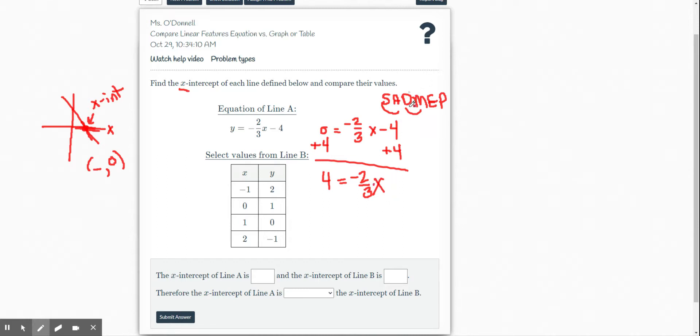All right, then the next thing I want to get rid of is that multiplied or divided term from my variable. So I see I'm multiplying by a negative 2 thirds. I know to undo that in one step, I can just multiply by the reciprocal. So negative 3 halves. If I do it to one side of my equal sign, I have to do it to both sides of my equal sign. Multiply by negative 3 halves.